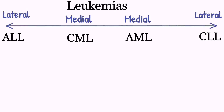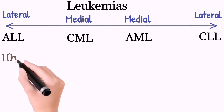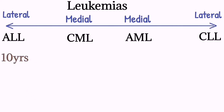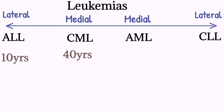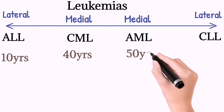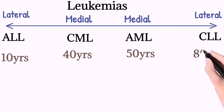The first trick is age. For ALL, age is around 10 years. For CML, age is 40 years. For AML, age is 50 years. While for CLL, age is around 80 years. If you don't have any idea about the given scenario or type of leukemia, then you can decide based on the age of the patient.